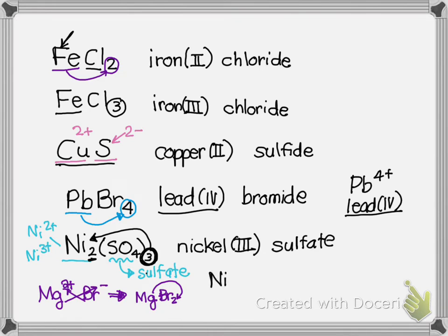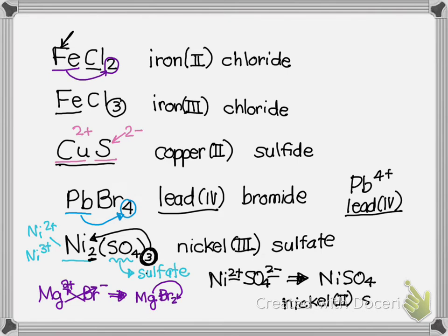To contrast: if nickel were a 2+ and sulfate is 2−, they'd balance one-to-one, giving NiSO₄. That would be nickel(II) sulfate. Remember, the Roman numeral tells you the charge, not how many ions you have.